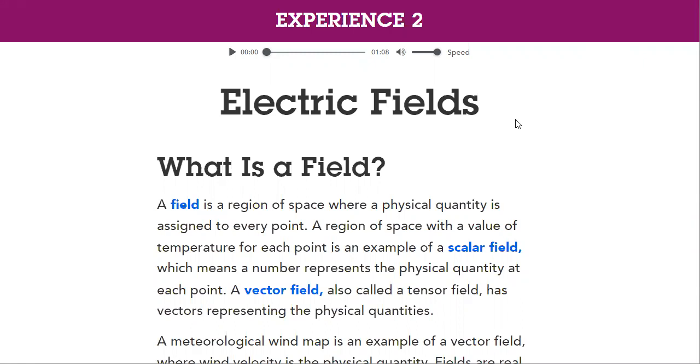What is a field? We will define it. A field is a region of space where a physical quantity is assigned to every point.